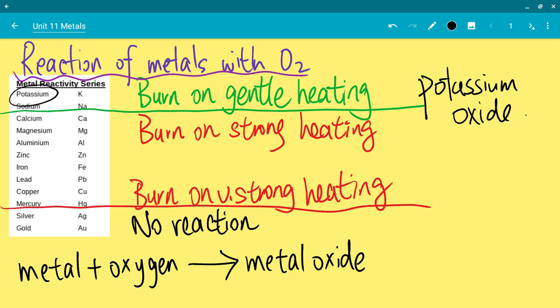So that's the first part of unit 11, reactions of metals with oxygen. In the next video we'll talk about reactions of metals with water slash steam. That's the end of this. I'll see you in the next one. Bye.